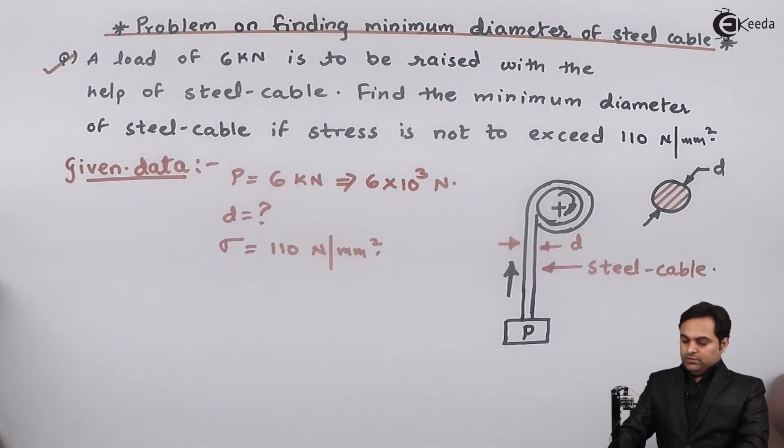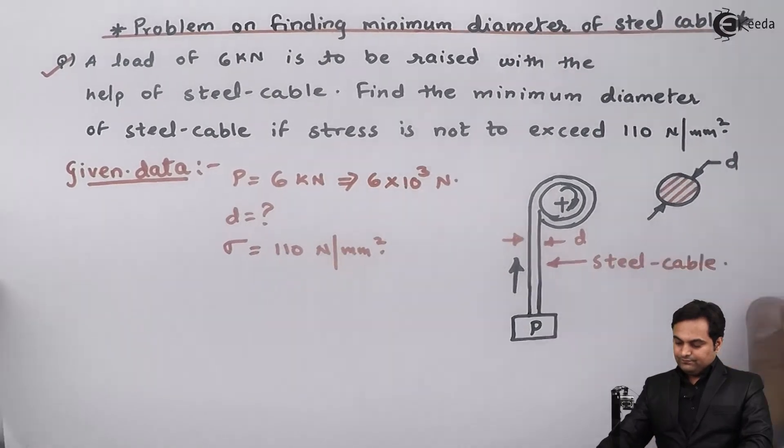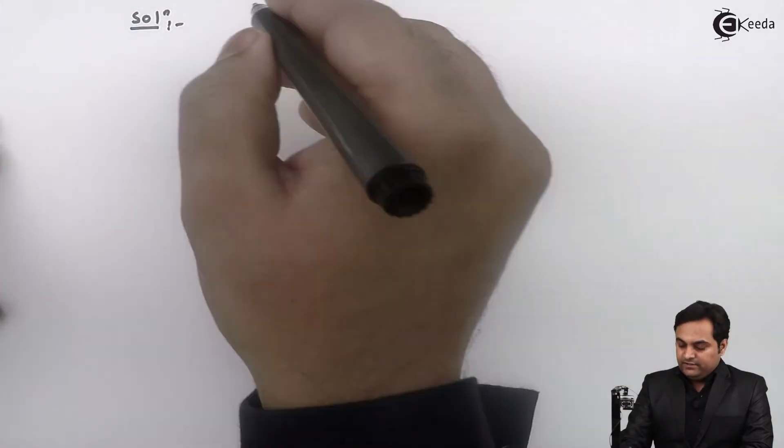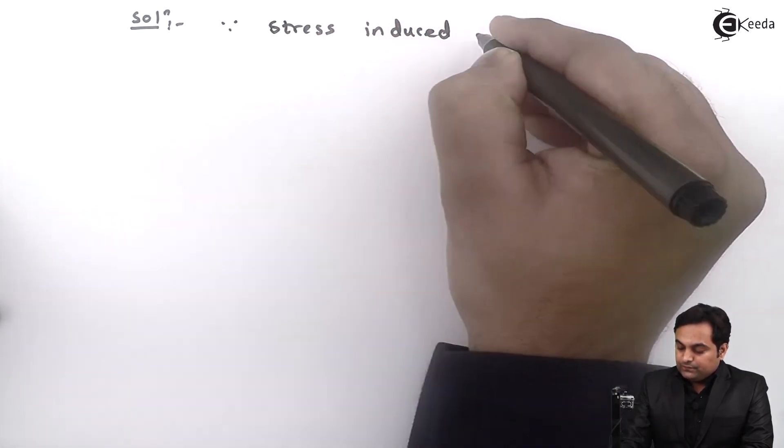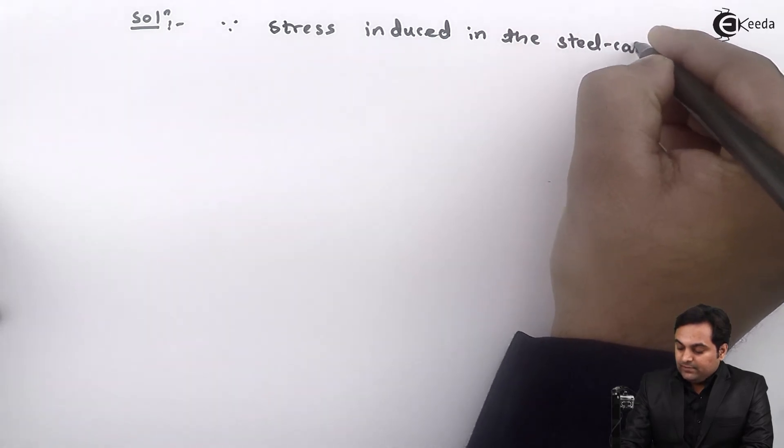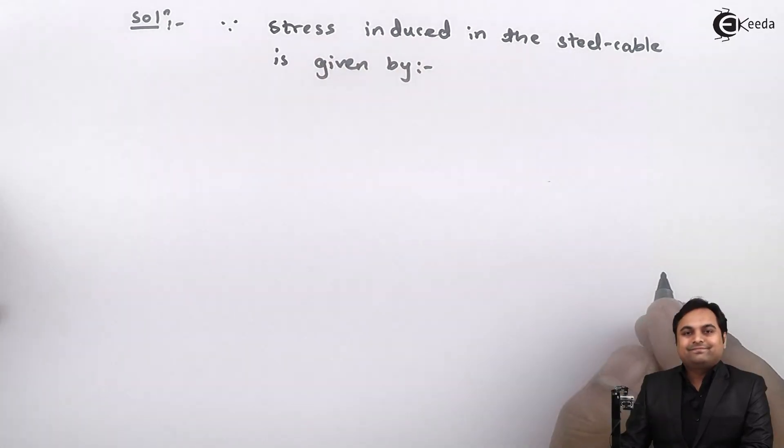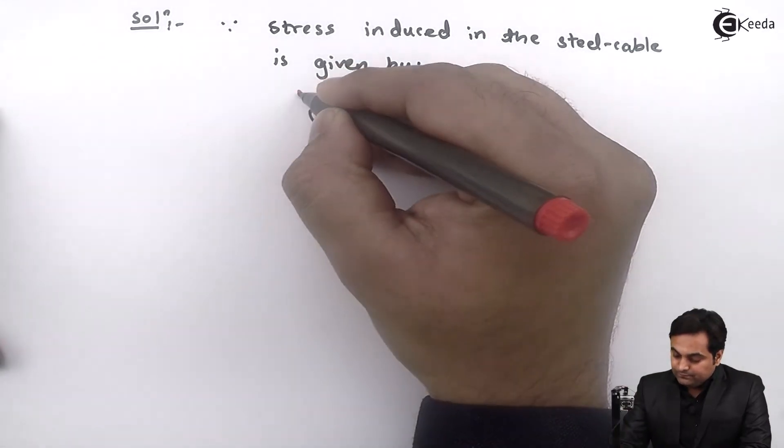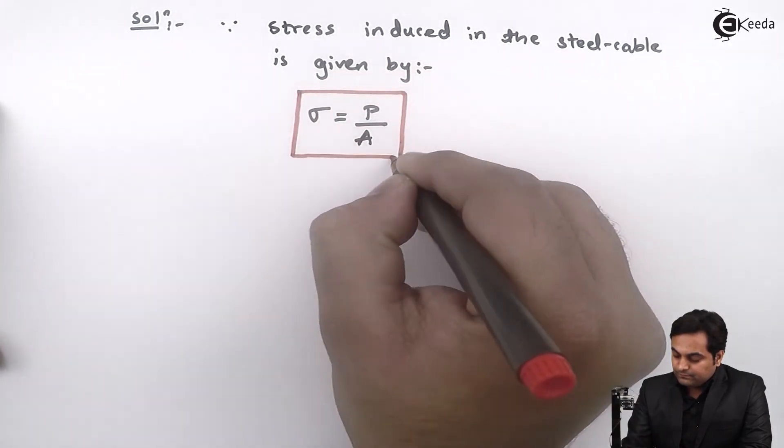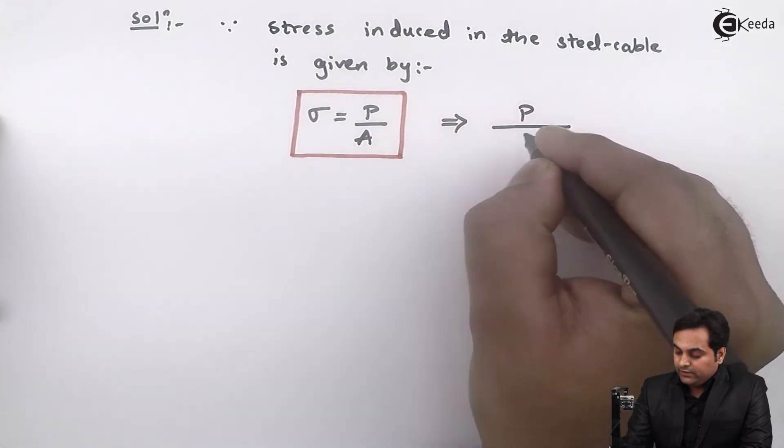Now let us try to get the solution for this problem. In the solution part, first I will say that since stress induced in the steel cable is given by: stress is equal to load upon area.